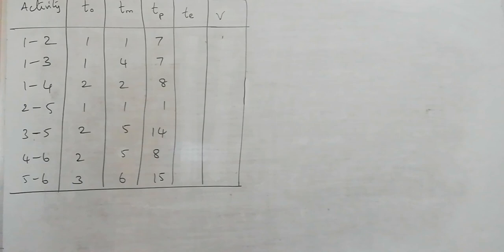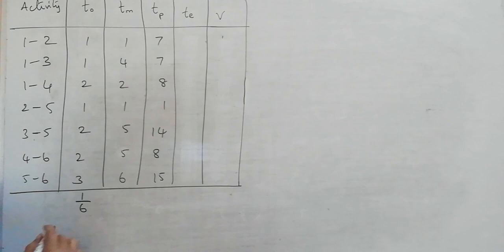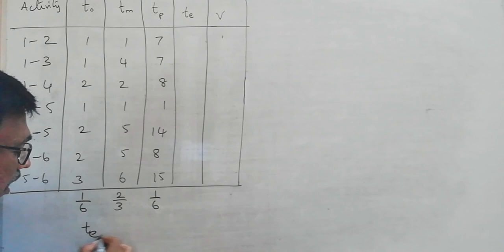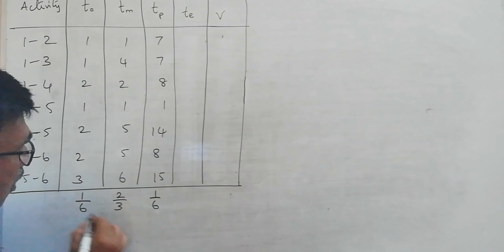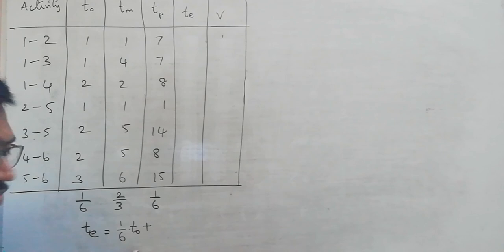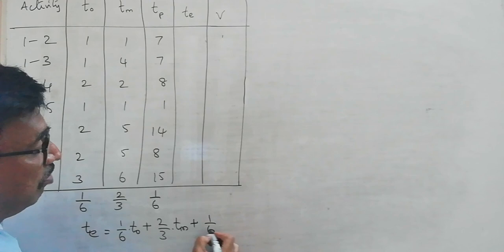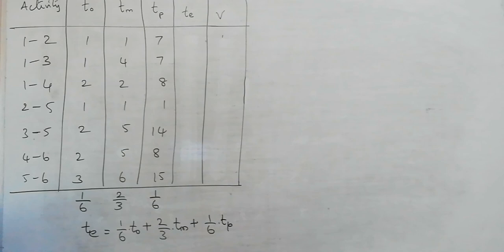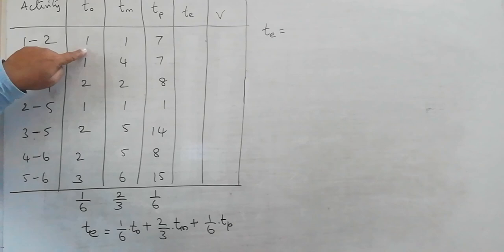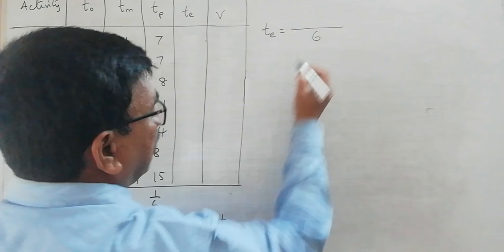Since these three time estimates are not certain, we assign probabilities: 1/6 each for optimistic and pessimistic time, and 2/3 for most likely time. The expected duration of each activity is then: (1/6)×T0 + (2/3)×TM + (1/6)×TP. Taking LCM of 6, this simplifies to: (T0 + 4×TM + TP) / 6.